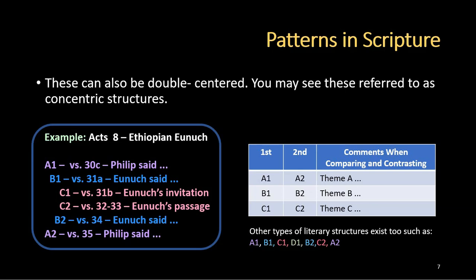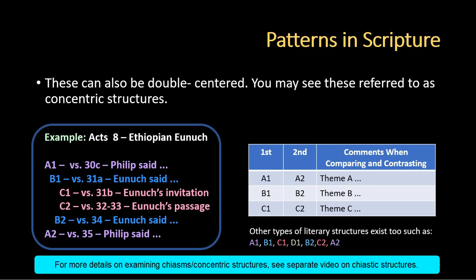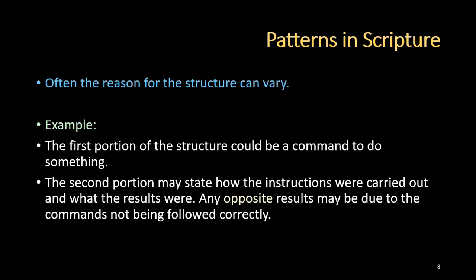There are other forms of literary structures similar to this. You may see something that has A1, B1, C1, D1, and then it reverses order with B2 and C2 — that B2, C2 is actually a unit in itself that compares to the previous B1, C1, and then this could be followed by A2. So it's not a full reversal, but more like a reversal within groups B and C. Often the reason for the structure can vary — the first portion could be a command to do something, and the second portion may state how the instructions were carried out and what the results were.